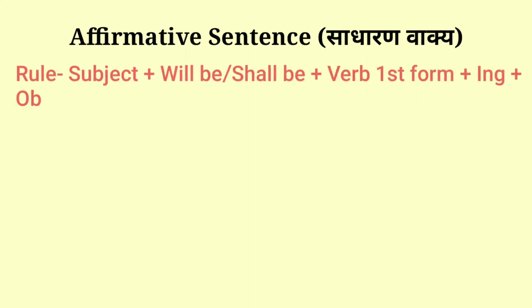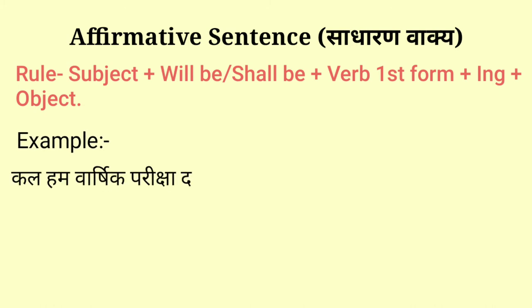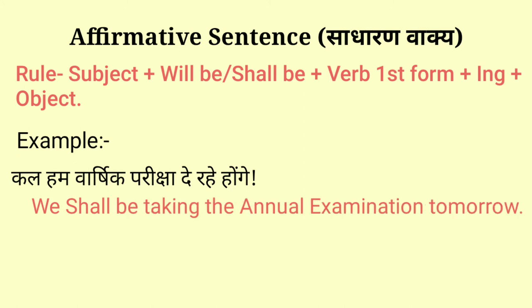Next is the affirmative sentence of future continuous tense. For making this sentence we use: Subject + will be / shall be + verb first form + ing + object. For example: 'Kal hum varshik pariksha de rahe honge' — We shall be taking the annual examination tomorrow. In this, 'we' is the subject, 'shall be' is the helping verb, 'taking' is verb first form + ing, and the rest is the object.